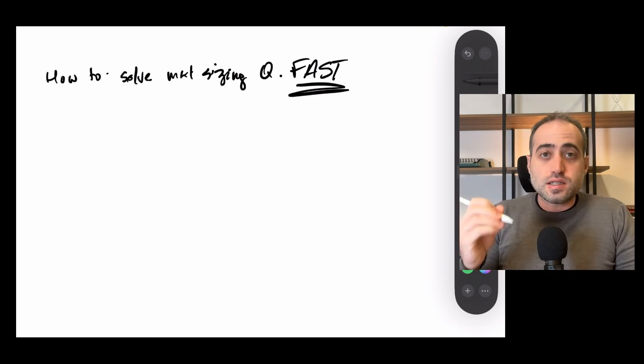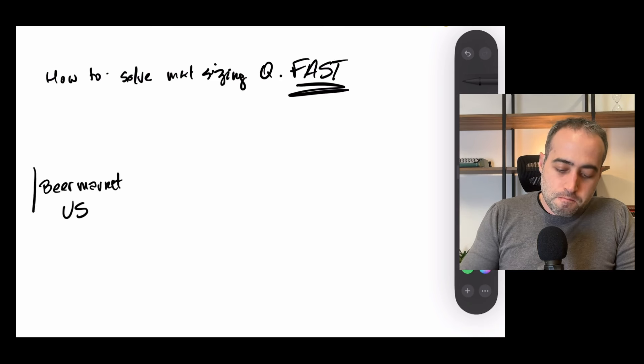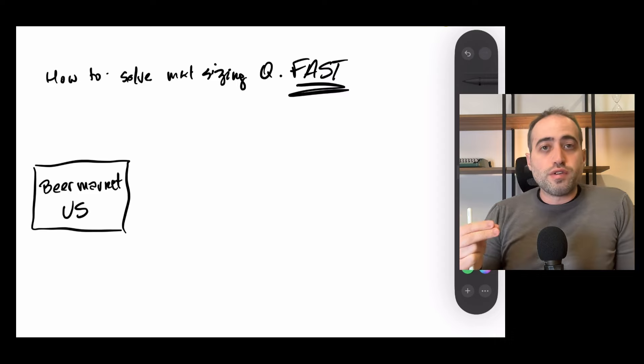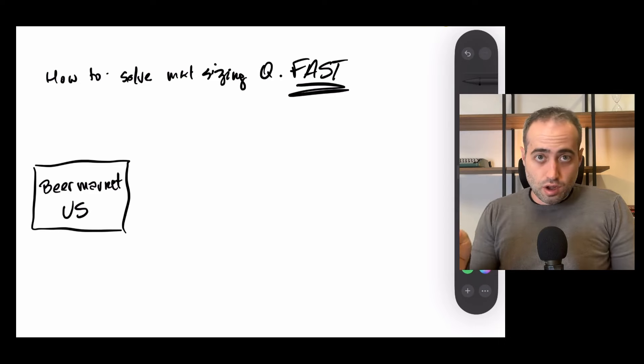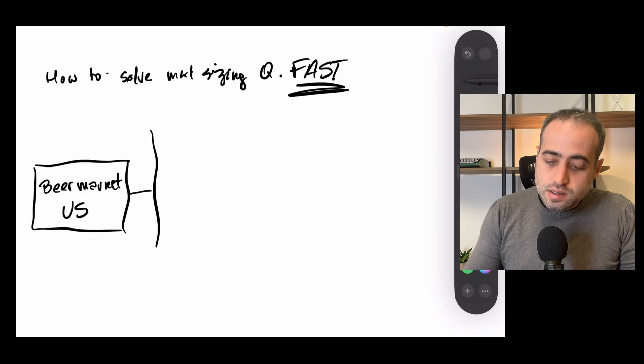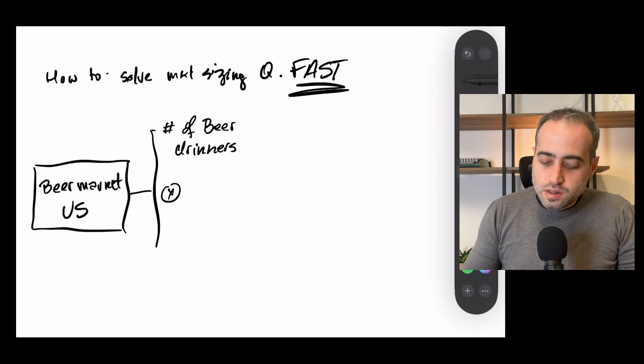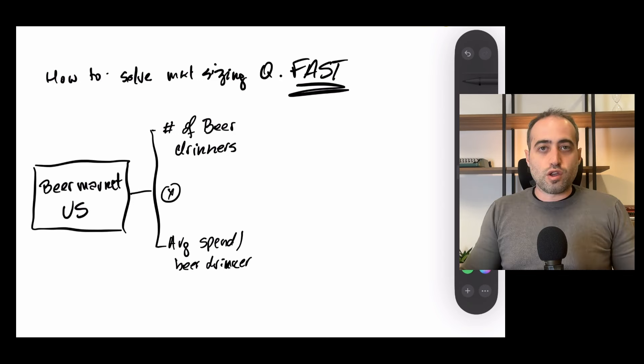Okay, so let me show you through an example. So let's say we want to estimate the beer market in the US. Okay, so pretty simple question, but we can solve it in different levels of depth. And that's gonna determine how long we take to solve it. So let me show you the 30 second answer. Basically, the beer market in the US is the number of beer drinkers times the average spend per beer drinker. Pretty obvious, right?